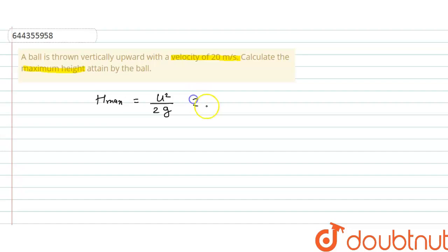So, if we put this value, u is equal to 20 meter per second, divided by 2 into g. If you take value of g, 10 meter per second square, approximately, then this is equal to 400 divided by 20.